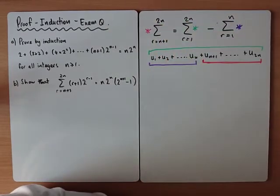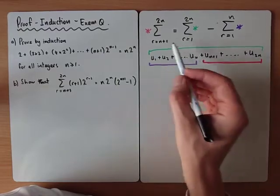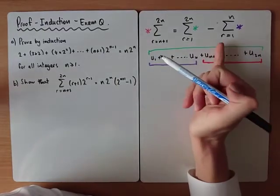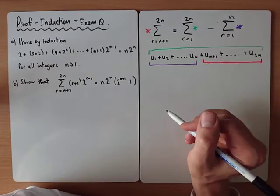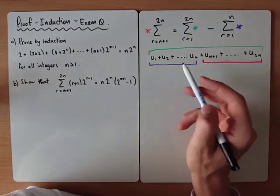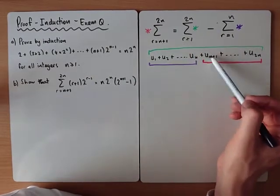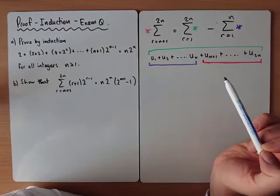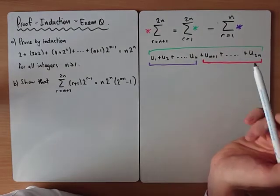A common mistake people make here is that when they see the sum from n+1 to 2n, they subtract the (n+1)th term. But if you subtract just the (n+1)th term it won't leave you what you need. To start from n+1 you must subtract the first n terms.